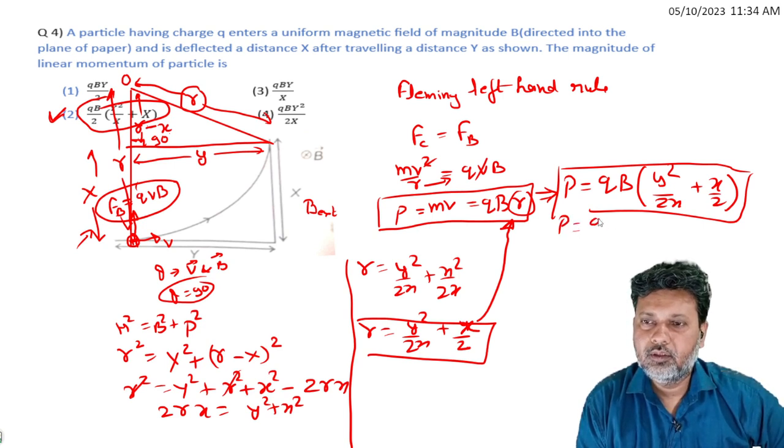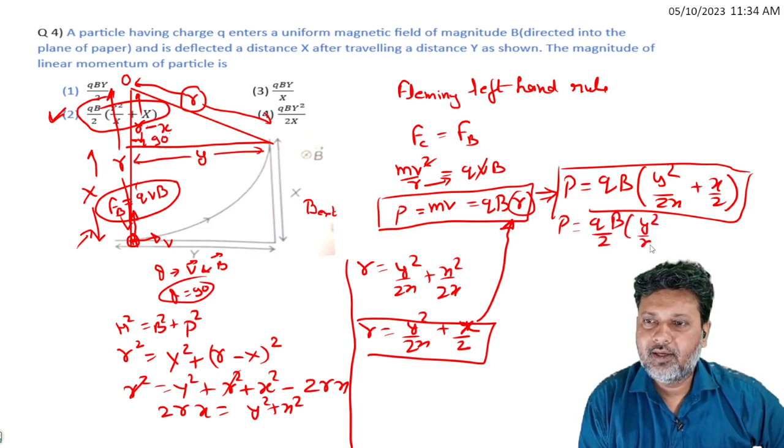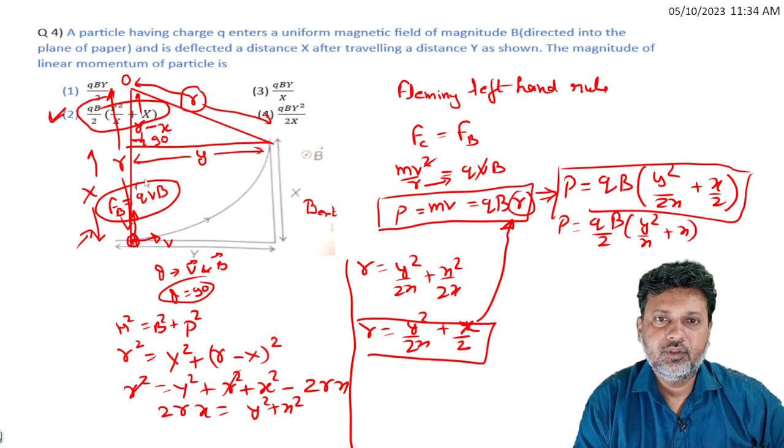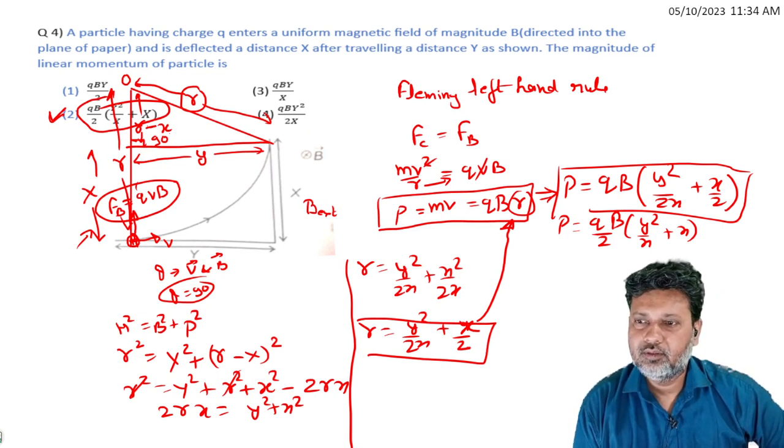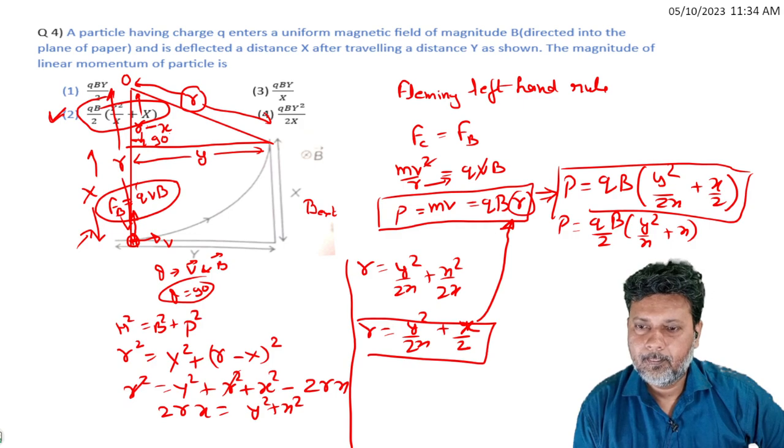Taking qB common outside: p equals qB times (y²/x plus x). Let's verify this matches the correct option.